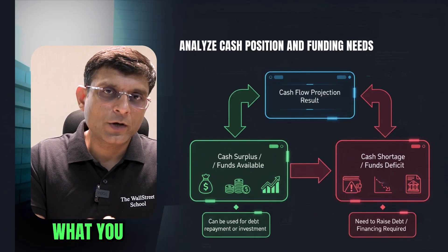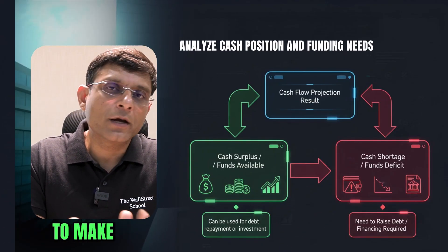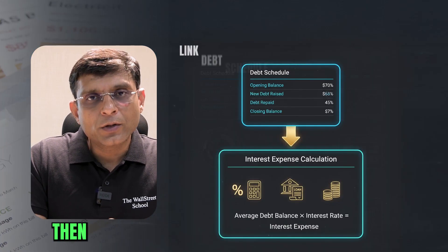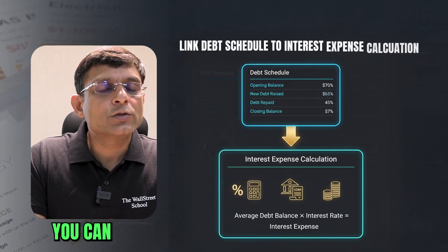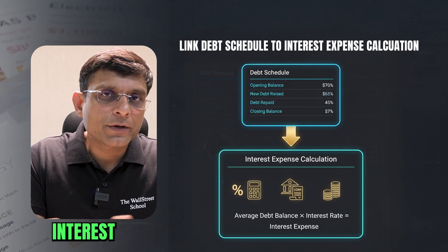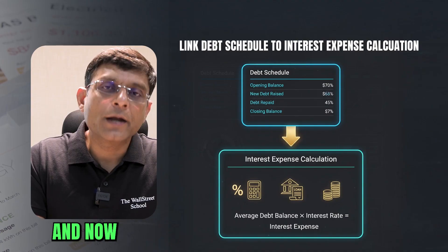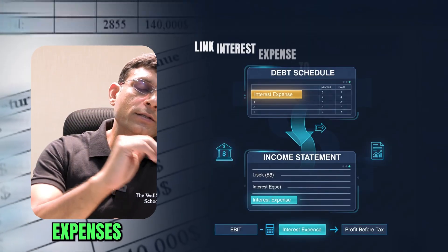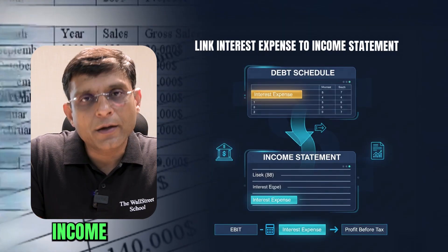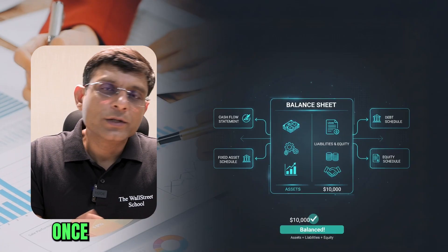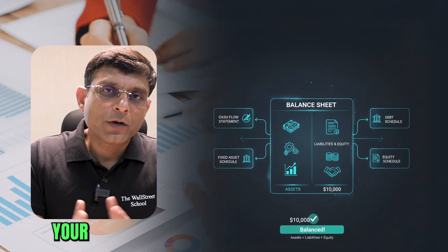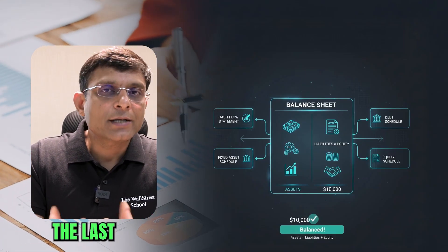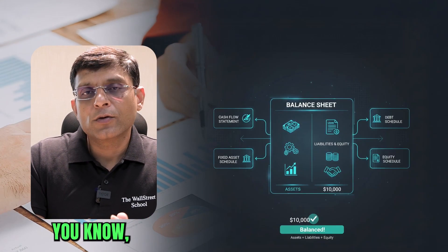Once you know the cash surplus or shortage, you can decide how much debt to raise, creating your debt schedule. On this basis, you can calculate your interest expenses and link them back to your income statement. Once your income statement and cash flow statement are complete, the last step is the balance sheet.